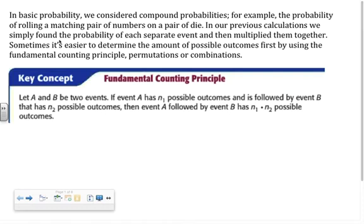In this lesson we're taking the concepts from previous basic probability lessons to the next level. First we're looking at the fundamental counting principle. The easiest way to put it: if I have a certain way of choosing one event and another event, I multiply the number of ways to choose the first thing times the number of ways to choose the second thing to get the total possible outcomes. This eventually leads to combinations and permutations.